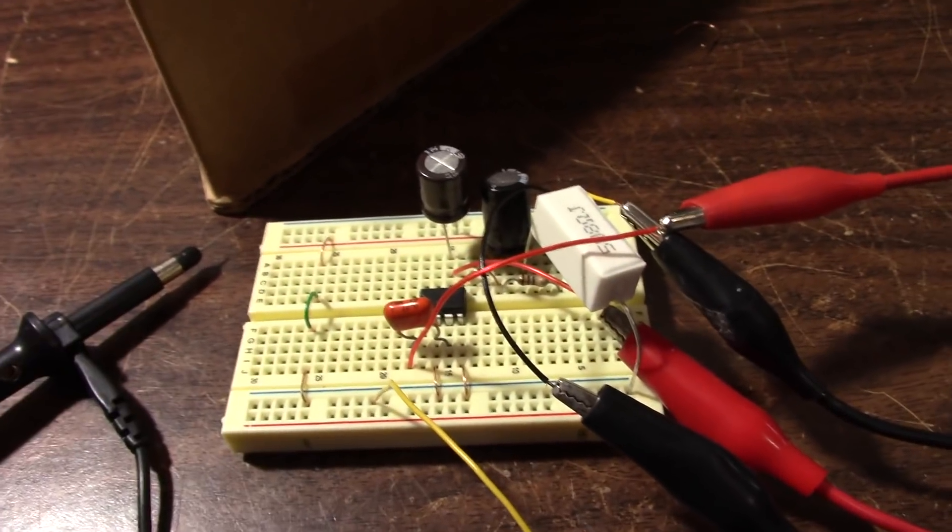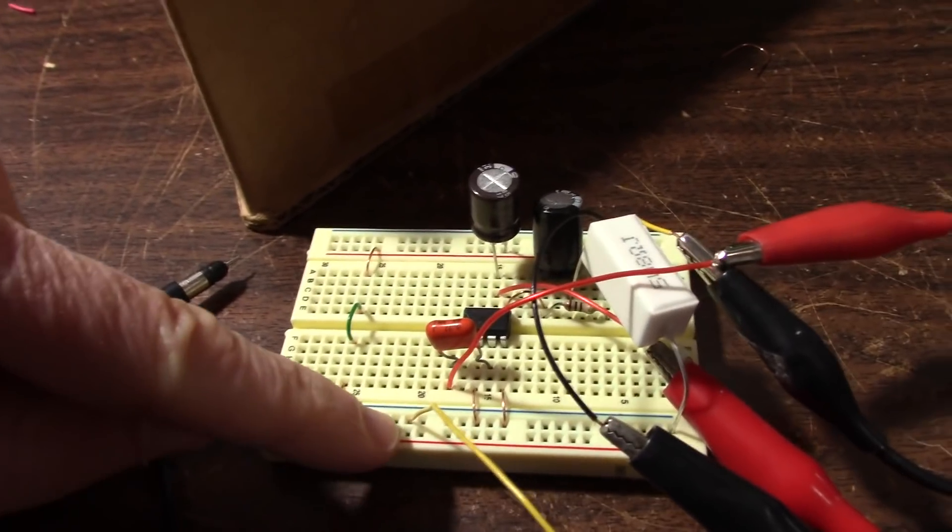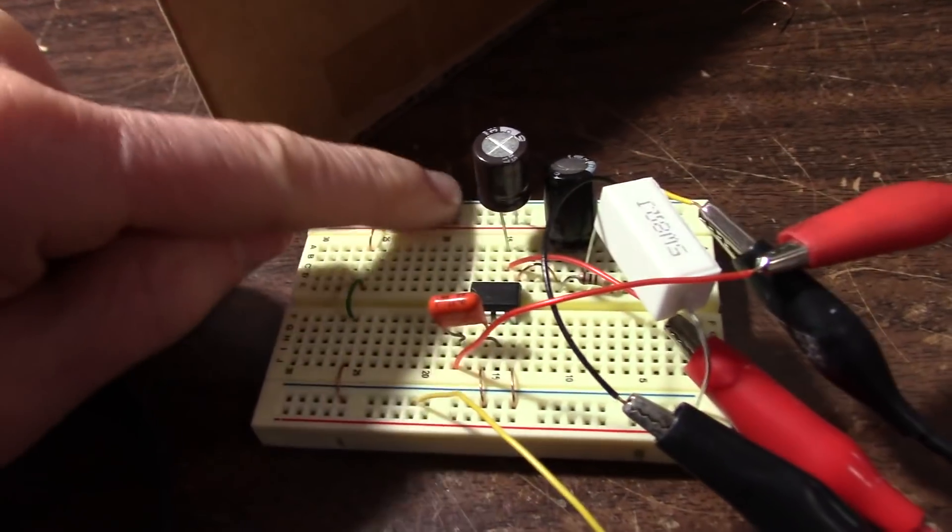So that goes to show you, especially on these socket boards, and again, even on a printed circuit board, if it's not laid out very well, that we're getting noise across the supply rails and even different parts of the ground.